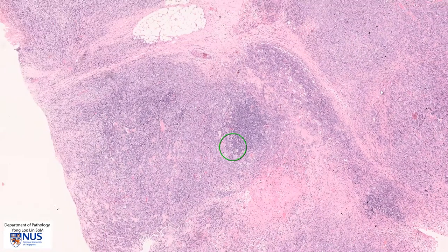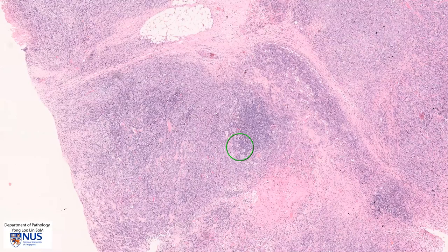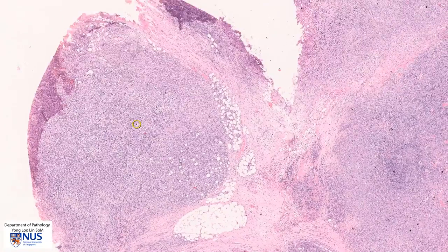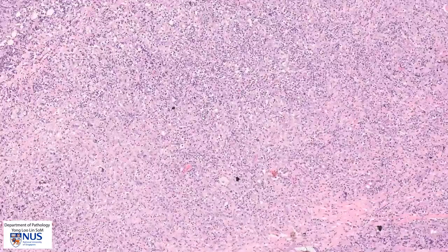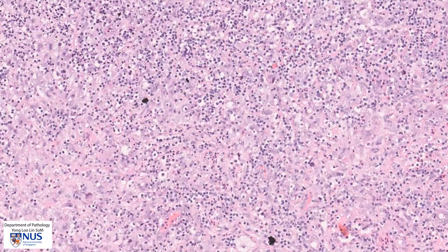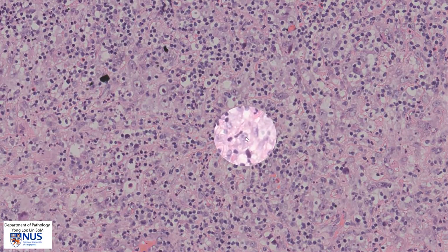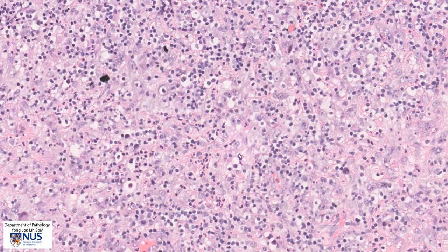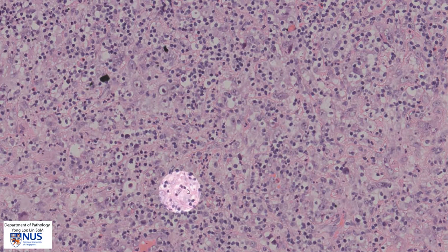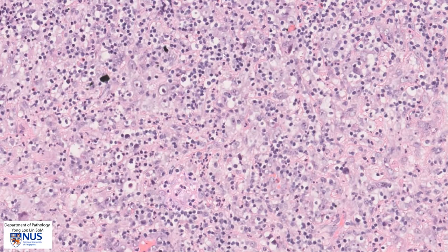Looking around, we can see that mostly the cells present are lymphocytes, and there are also some paler areas which are rich in macrophages. Here are some macrophages with abundant cytoplasm and quite pale nuclei. Here is another macrophage with abundant cytoplasm, and there are many small lymphocytes admixed with these cells.